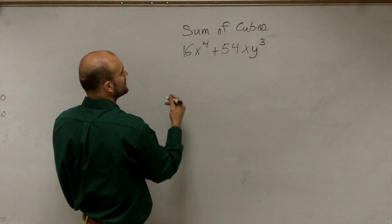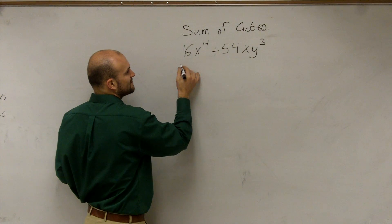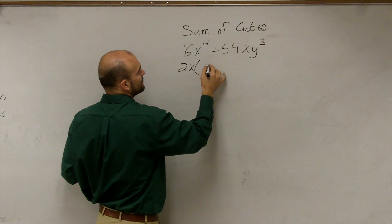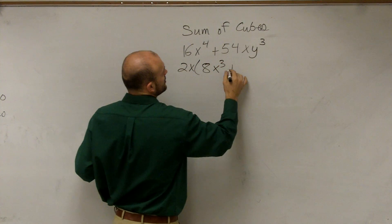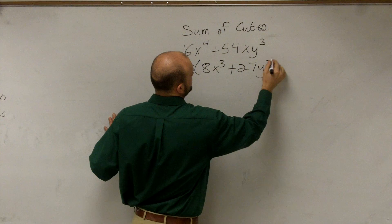But when looking into factoring this, the main important thing is we can factor out the 2x. And therefore, that leaves you with 8x cubed plus 27y cubed.